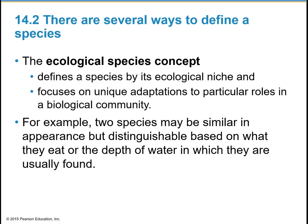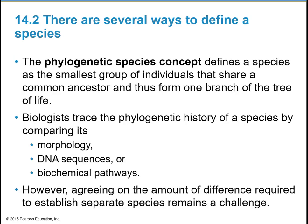The phylogenetic species concept defines a species as the smallest group of individuals that share a common ancestor and thus form one branch of the tree of life. Biologists can trace the phylogenetic history of a species by comparing its morphology — its observable physical traits — DNA sequences, or biochemical pathways. Agreeing on the amount of difference required to establish separate species still remains a challenge.